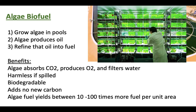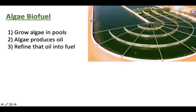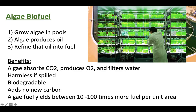First of all, algae is absorbing CO2, producing oxygen, and filtering the water. It's totally harmless if you spill it, biodegradable, and it's not adding any new carbon into the atmosphere. Compared to corn ethanol, algae fuel yields between 10 and 100 times more fuel per unit area. You can grow it in pools, so you can set up a facility pretty much anywhere — it doesn't need nice arable farmland. You can set it up in the desert.